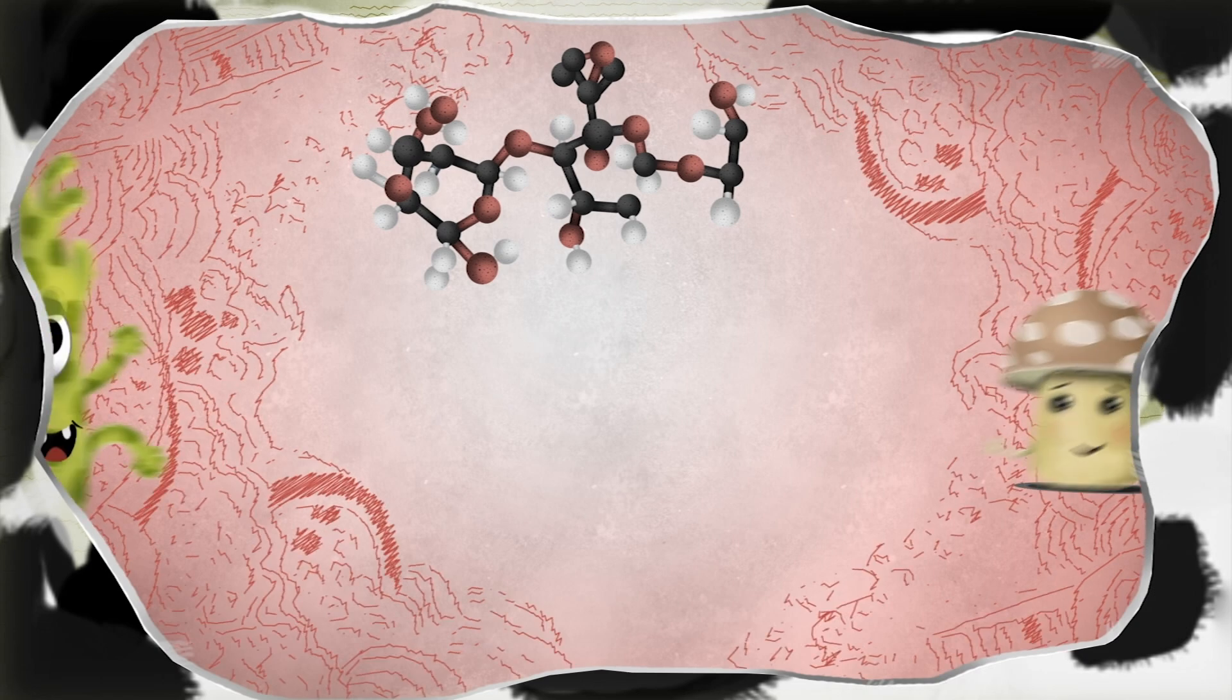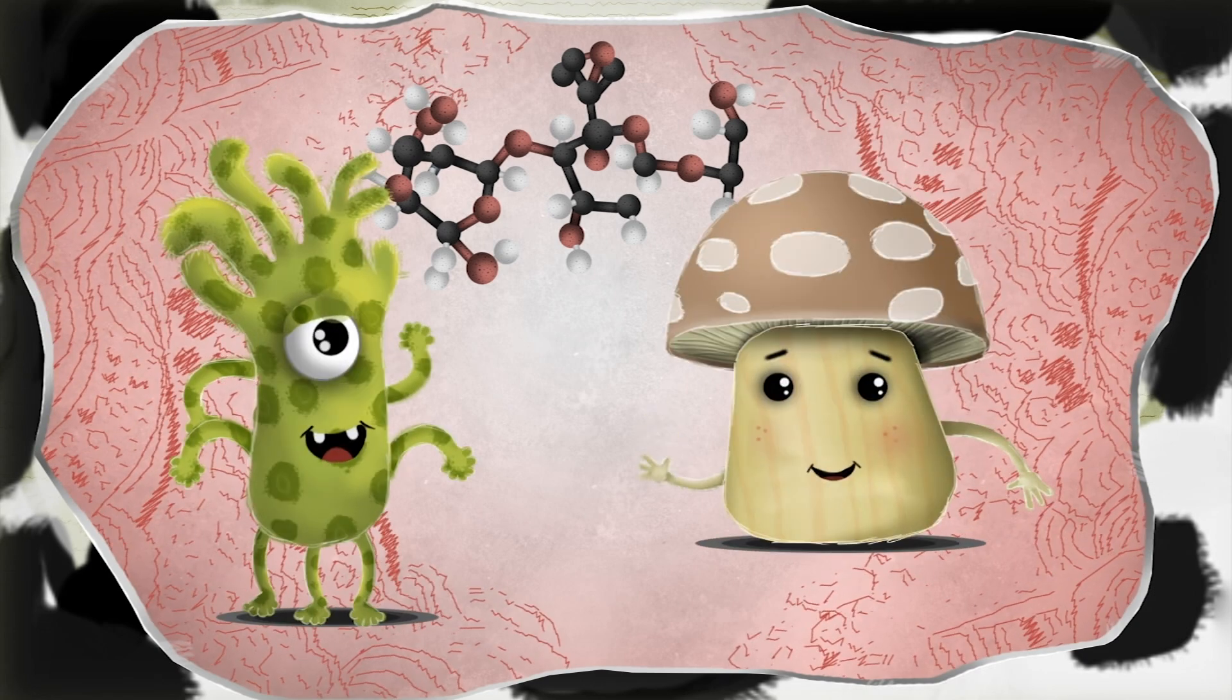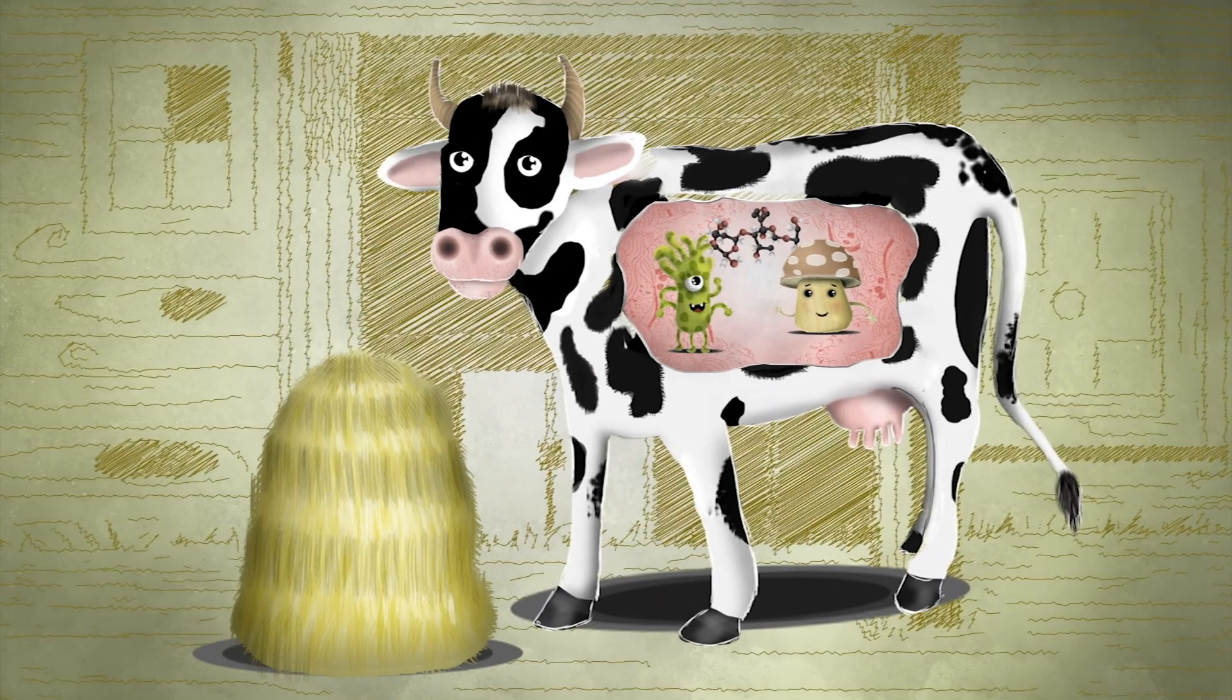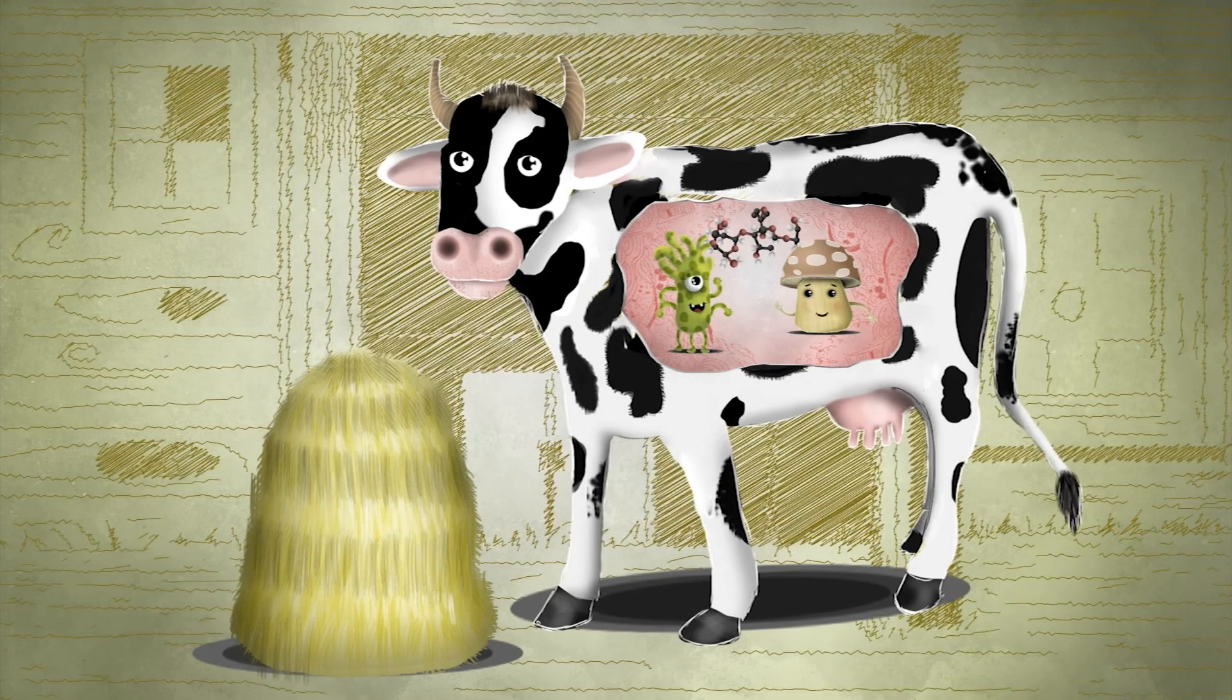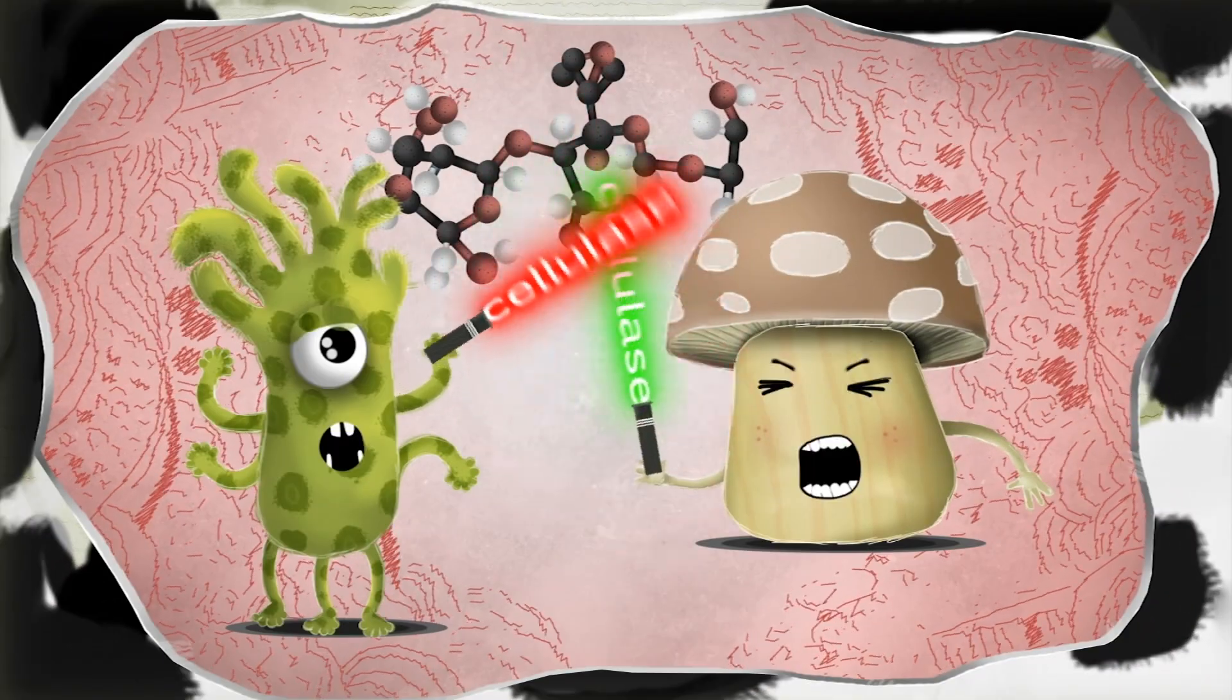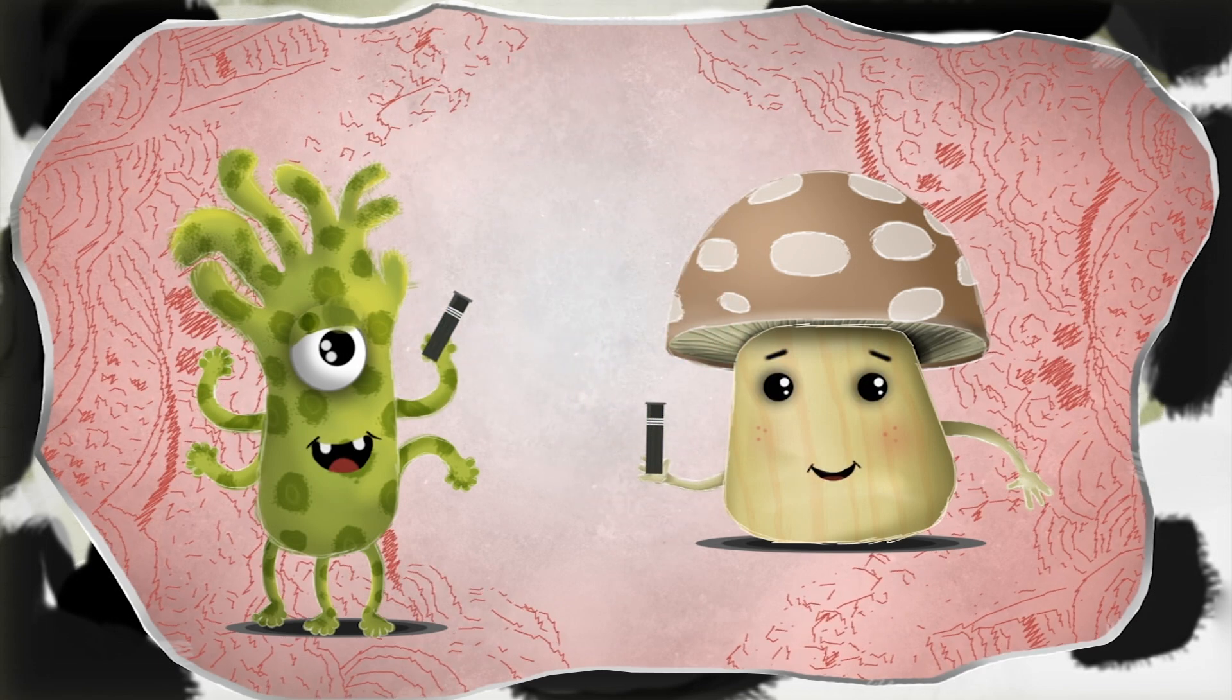But some microorganisms like bacteria or fungi break down cellulose for energy all the time. For example, dairy cows eat foods like hay or alfalfa which are full of cellulose. Microbes that live in their stomachs produce an enzyme called cellulase, which breaks apart the cellulose molecules so that the cow can use what's left for energy.